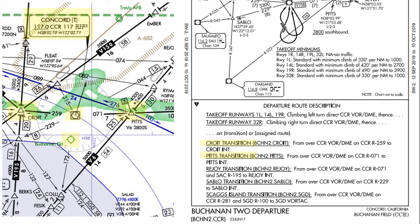Looking at the en route low chart for this area, we see for instance that if we're headed west, then Croit intersection would be along our route. But if we're headed east, then Pitts intersection is along our route. Let's assume that we're heading east on this flight, so Pitts works for us. I'm going to keep this snapshot of the en route low chart here so that we can stay oriented.